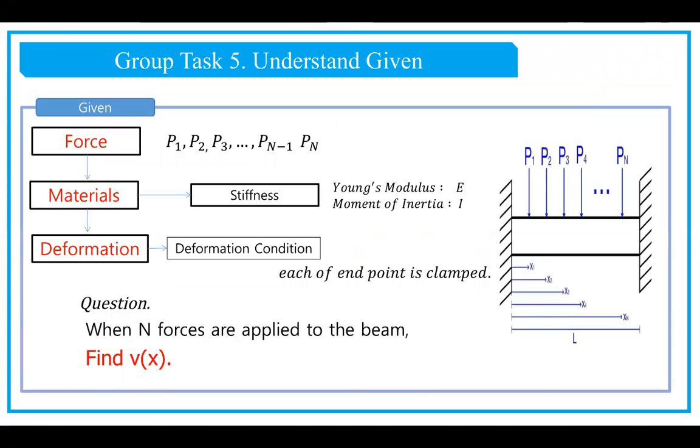Here we have the analysis flowchart. For forces, we have P1, P2, P3, and up to Pn. For material properties, we have Young's modulus E and moment of inertia I. Our goal is to find the deformation v(x). We can see that both ends of this beam are clamped.